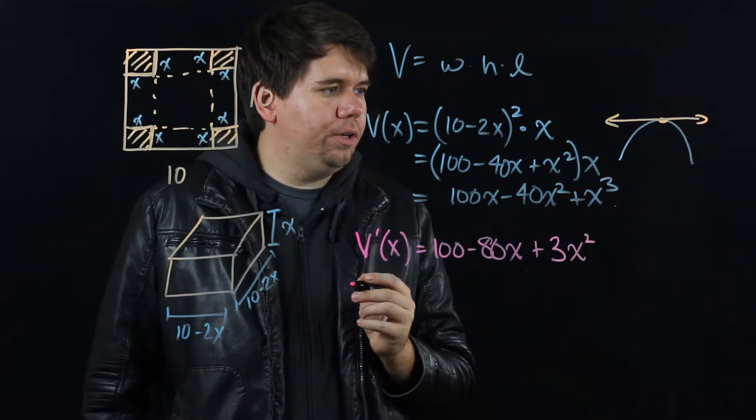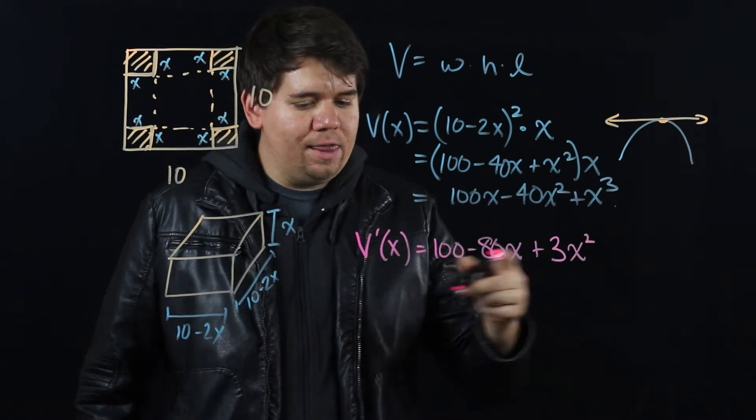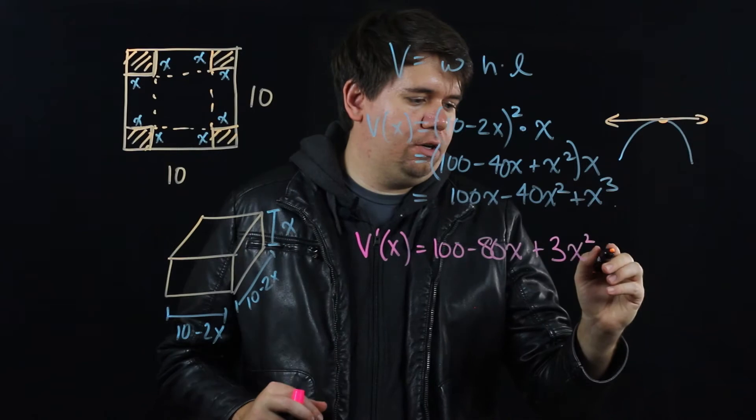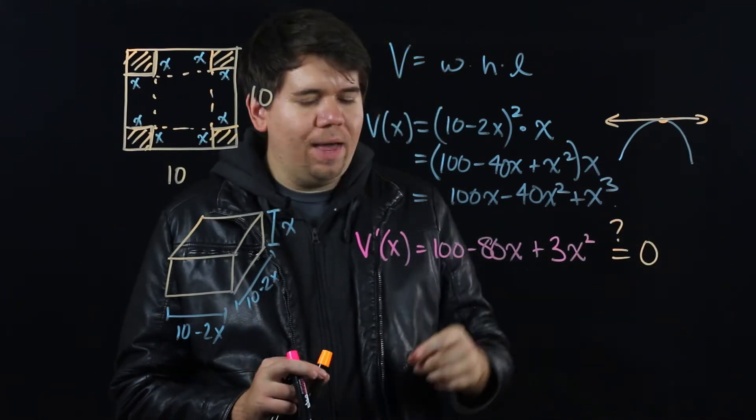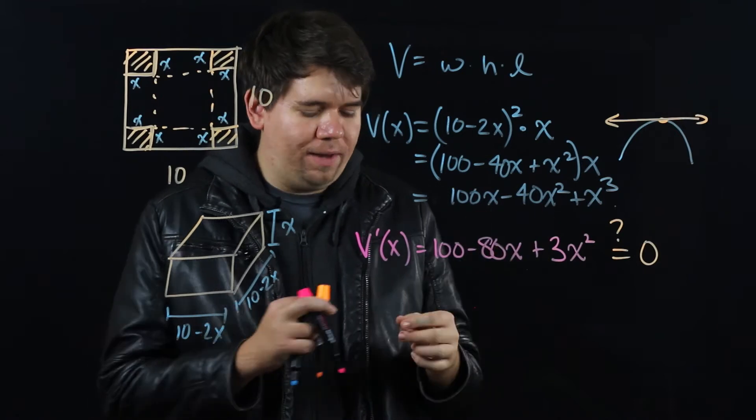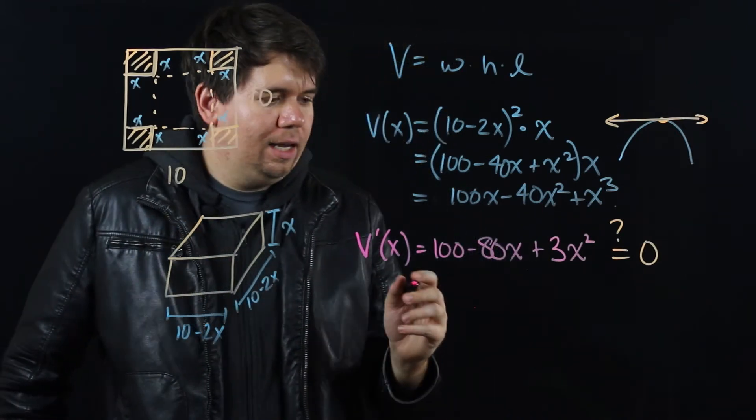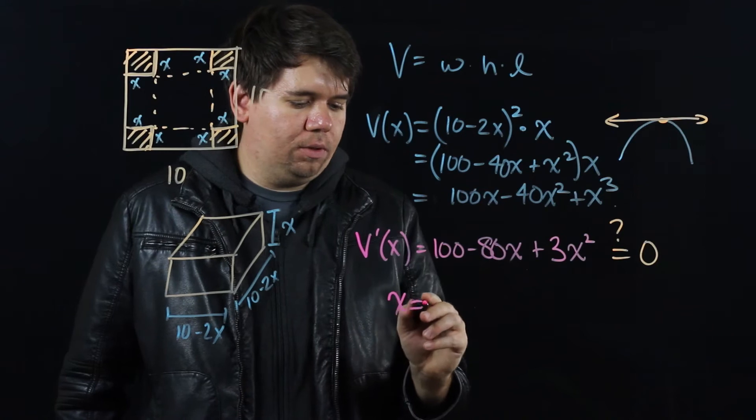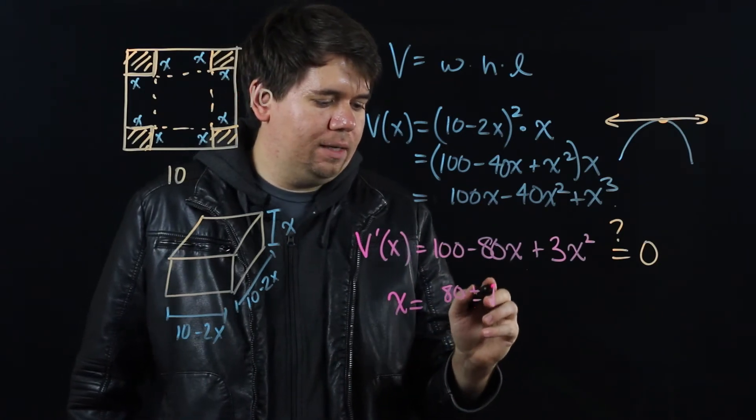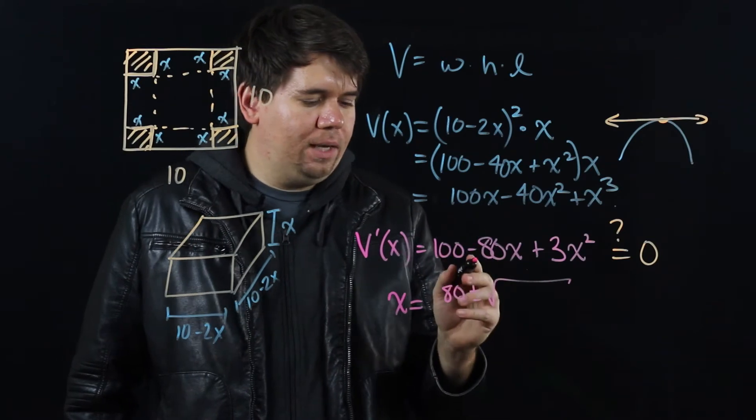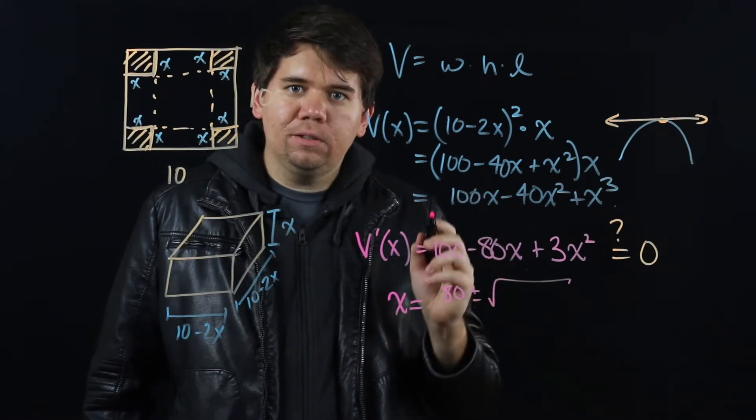And then what we'll do is we'll try and solve when that derivative comes out to equal zero. When is this equal to 0? Maybe you can factor this, or if you forget or have trouble factoring it, you can just go ahead and use your quadratic formula. x is equal to negative b, that's 80, plus or minus the square root of b squared - negative 80 squared.